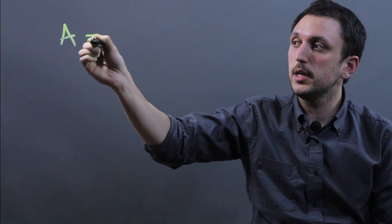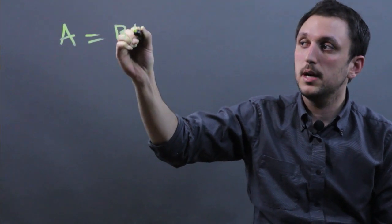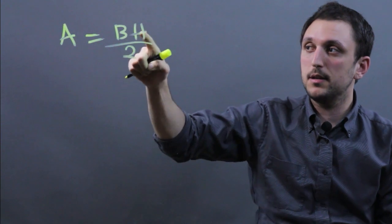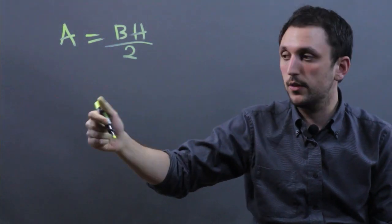The area of a triangle equals base times height divided by 2. The thing about the base and the height is they have to be perpendicular to each other.